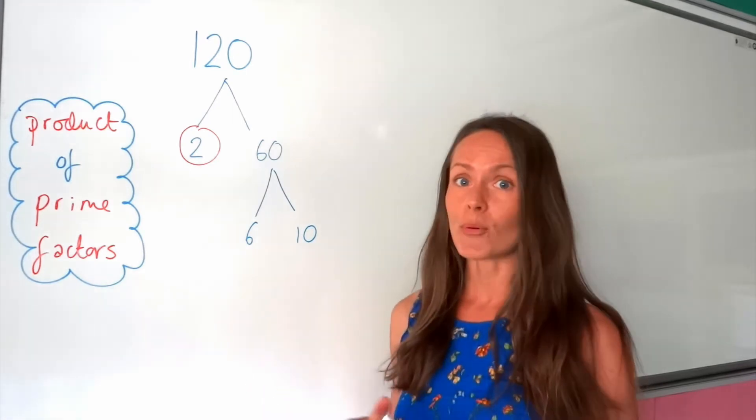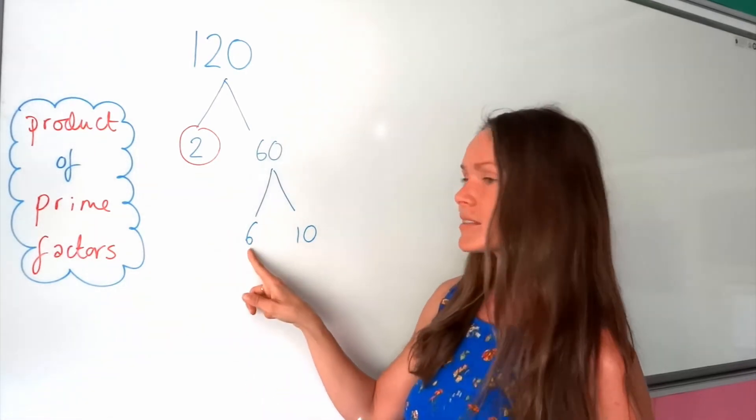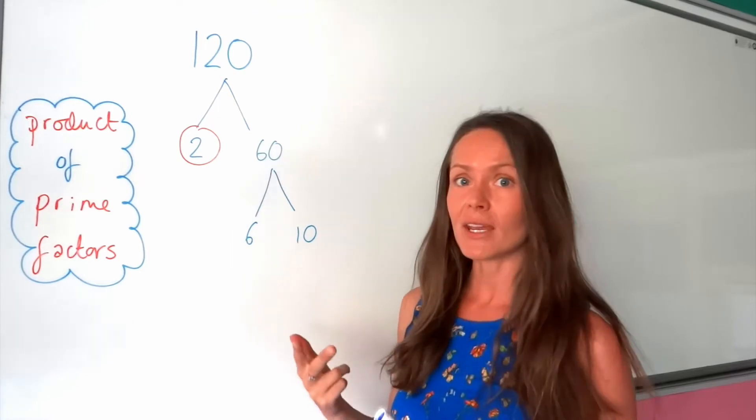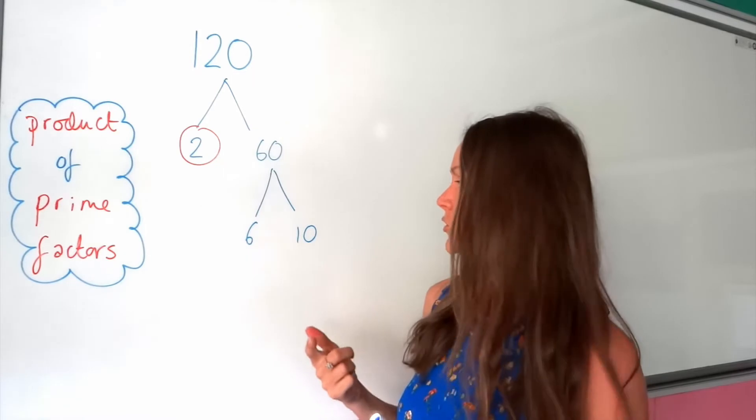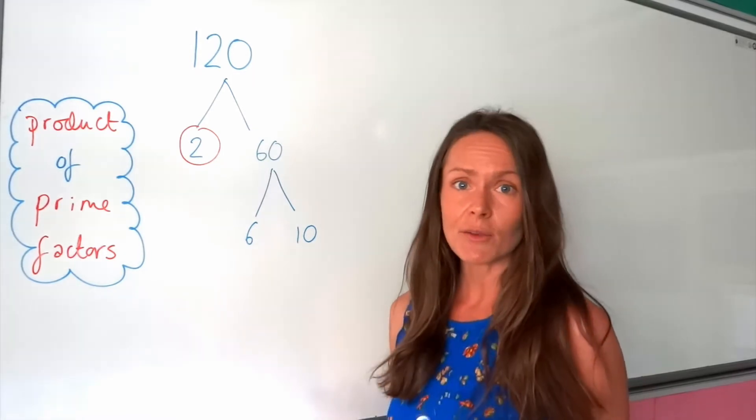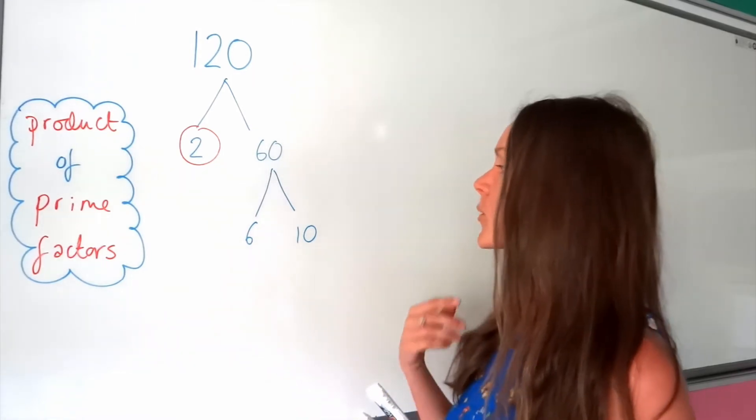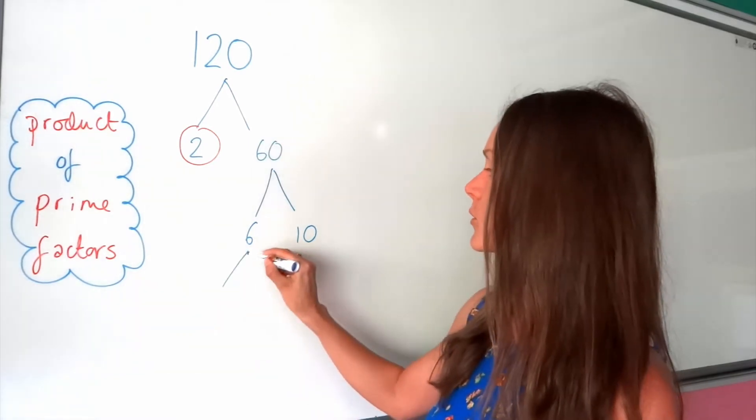Neither of these are prime numbers, because 6 has lots of factors. It has 1, 2, 3 and 6. Same with the number 10, we've got 1, 2, 5, 10. So they're definitely not prime numbers, so I need to continue the branches for both of those.